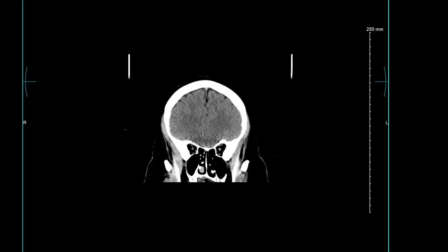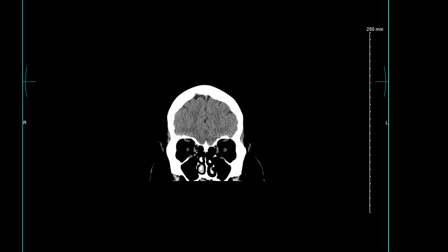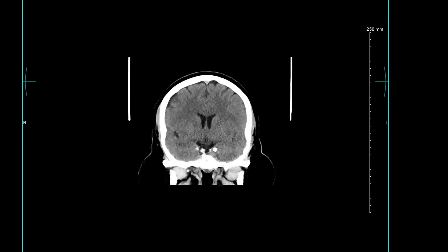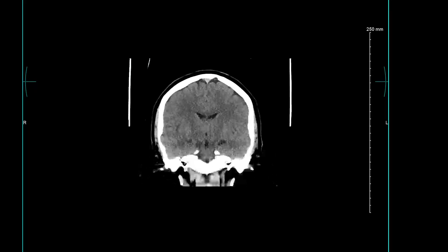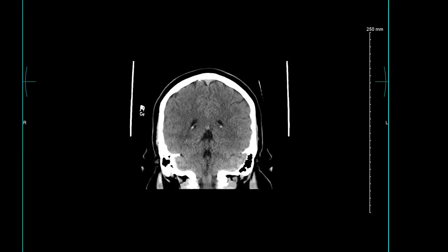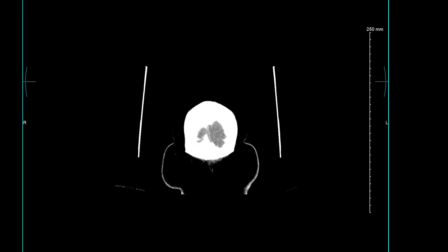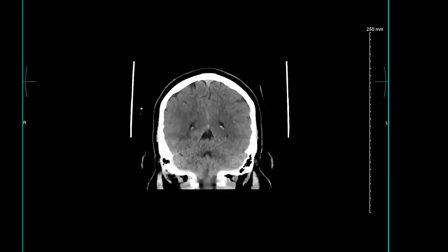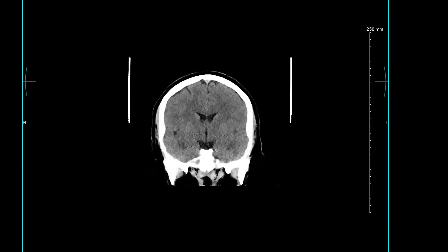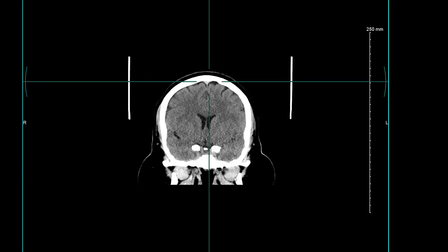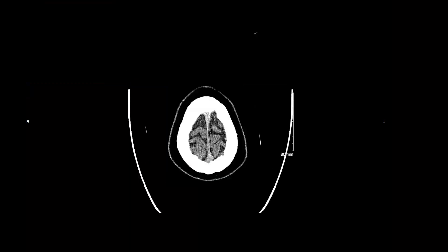I'll look at the nasal septum, the maxillary sinuses, and the temporomandibular joints. Confident that I'm seeing no abnormality, I will go back to my original axial images.